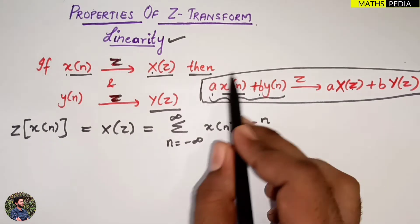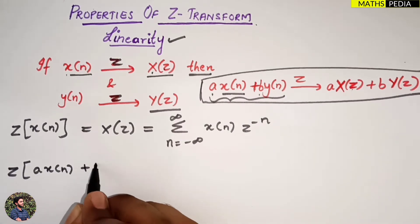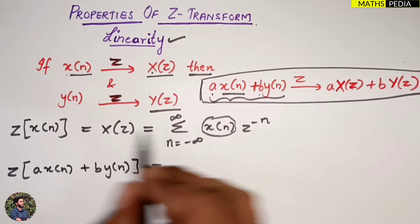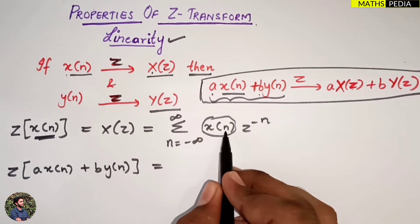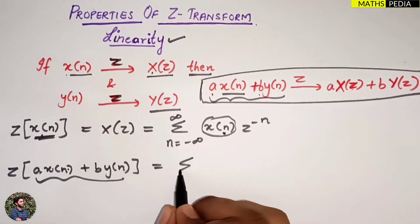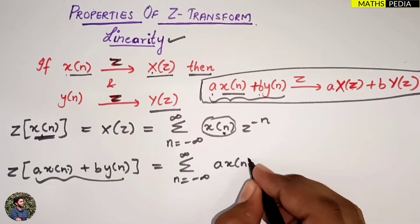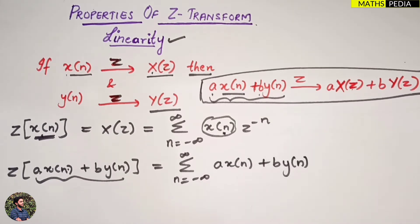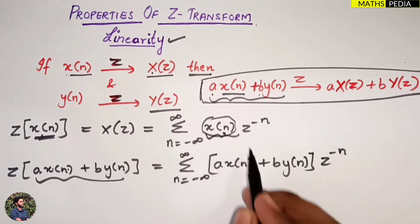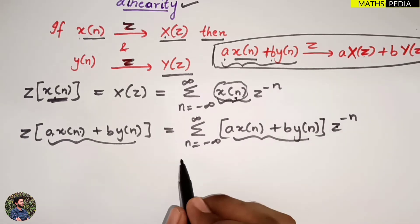We have to find the Z transform of a·x(n) plus b·y(n). Using the definition, in place of x(n) we put a·x(n) plus b·y(n), so this becomes summation from n equal to minus infinity to infinity of [a·x(n) plus b·y(n)] into z raised to the power minus n. Now we expand the bracket.